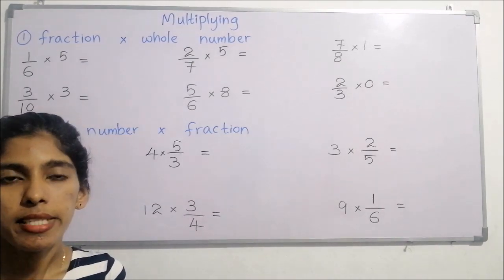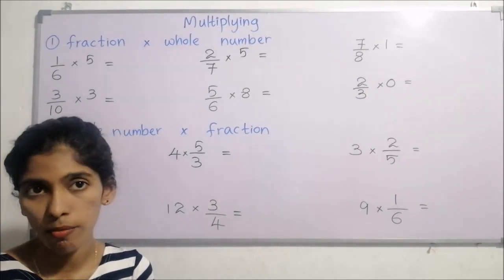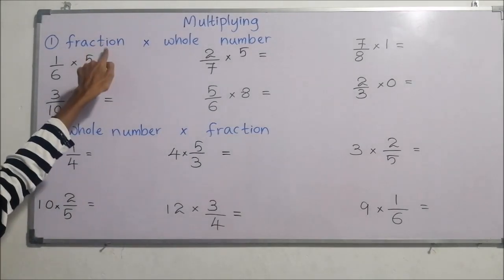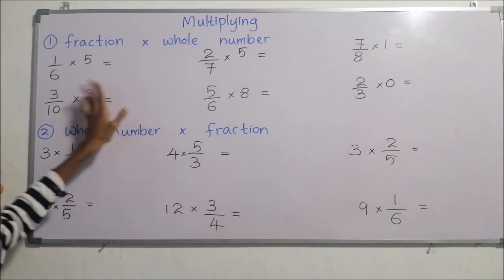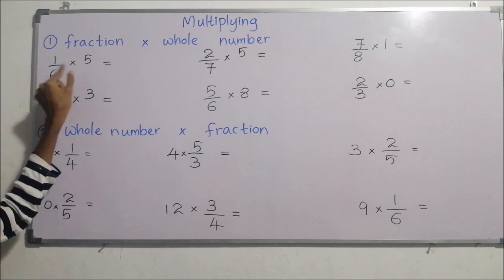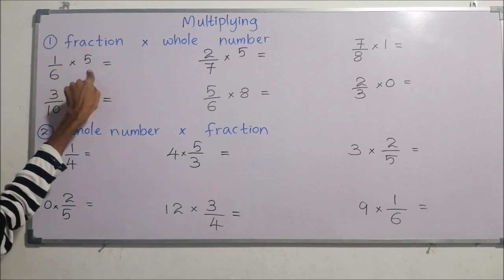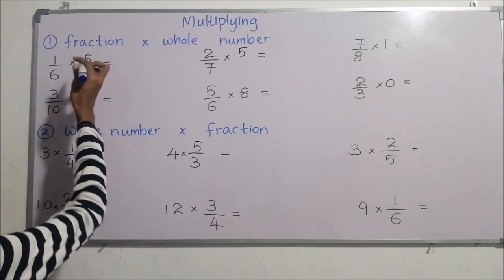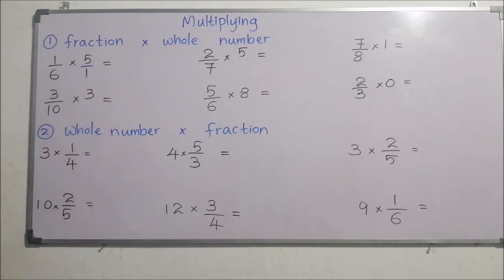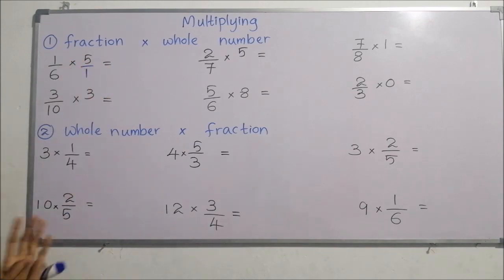Now we will learn how to multiply fractions by whole numbers and whole numbers by fractions. When given a fraction multiplied by a whole number, remember that the whole number is like a numerator — you can put one underneath and write it as a fraction. Any whole number can be written as a fraction by putting one as the denominator. This is not compulsory, but it can help avoid confusion.